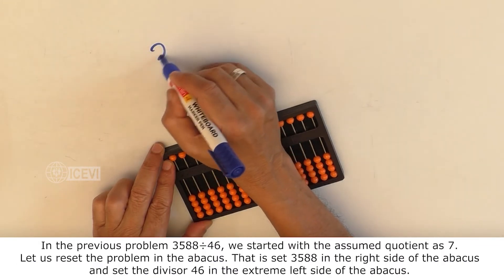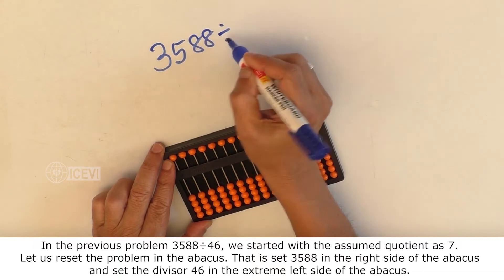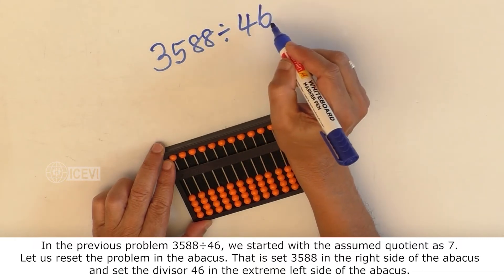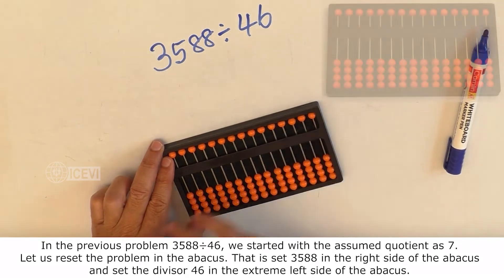In the previous problem, 3588 divided by 46, we started with the assumed quotient as 7.